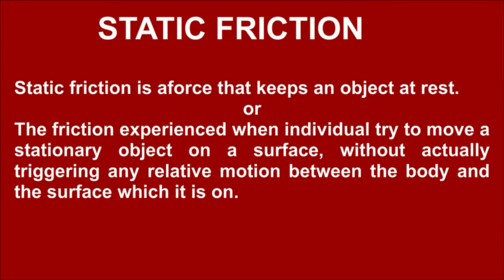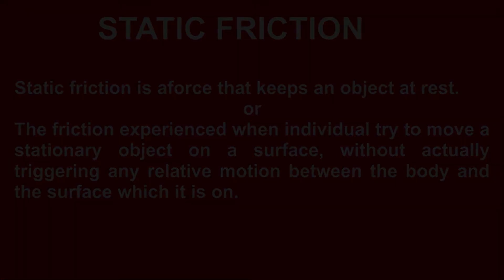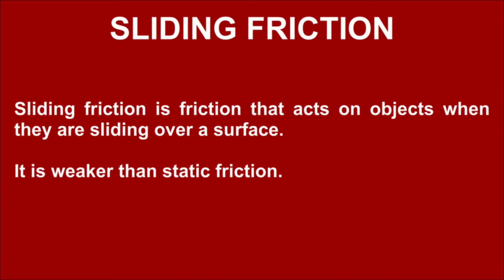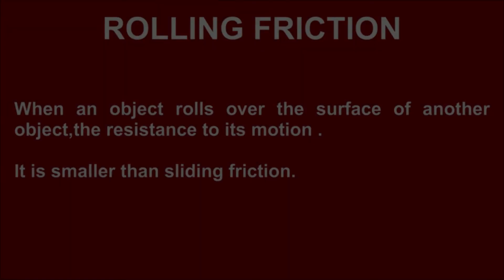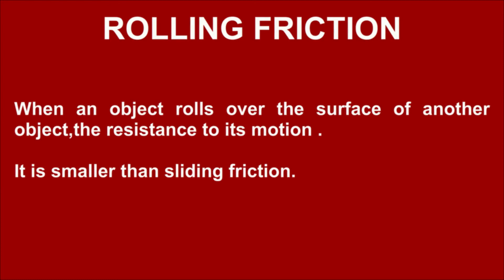Static friction is a force that keeps an object at rest, or the friction experienced when one tries to move a stationary object on a surface without actually triggering any relative motion between the body and the surface it is on. Sliding friction acts on objects when they are sliding over a surface — it is weaker than static friction. Rolling friction is the resistance to motion when an object rolls over the surface of another object — it is smaller than sliding friction.